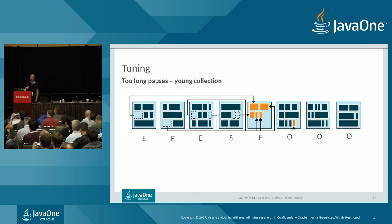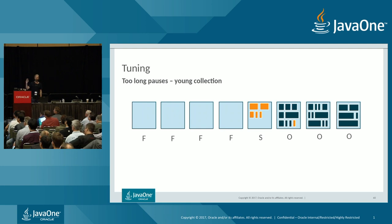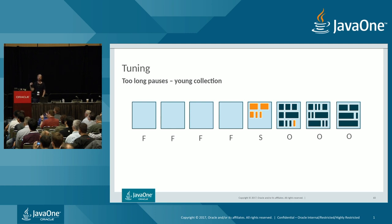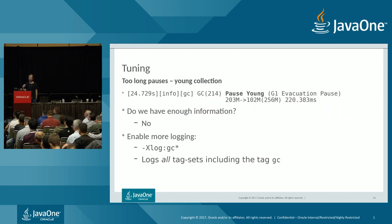G1 compactly copies the live objects from eden and survivor regions into a free region and updates all references so the heap looks consistent when the Java application resumes. After copying, the free region becomes a survivor region and the old eden regions become free regions available for new allocations. We started with one free region and ended up with four — the heap is more compact and memory can be reused.